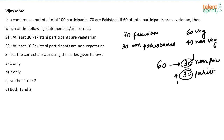There are totally 60 vegetarians. The maximum number of non-Pakistanis who can be vegetarians is all 30 of them. In that case, the minimum number of Pakistanis who have to be vegetarian is 30. If the number of non-Pakistanis who are vegetarian decreases — say less than 30 — accordingly the number of Pakistanis who are vegetarians will become more than 30. So, at minimum 30 Pakistanis have to be vegetarian. The first statement is correct.